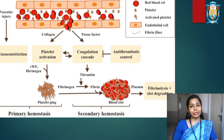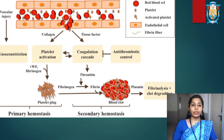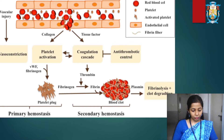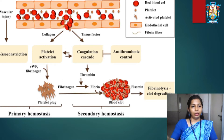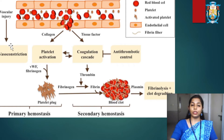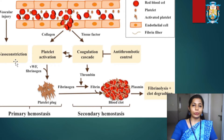Hemostasis involves four interrelated steps. At first, blood vessel injury takes place, due to which vasoconstriction — that means constriction in the blood vessels — will take place.